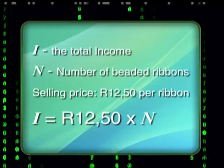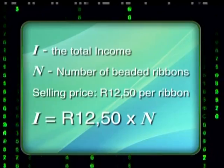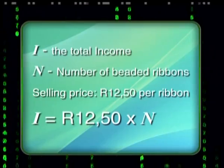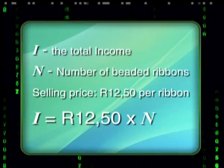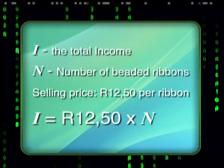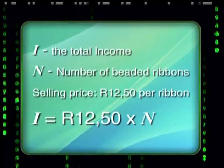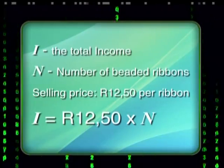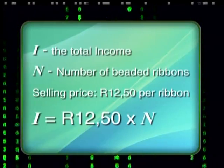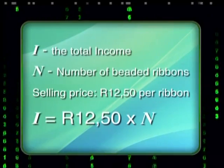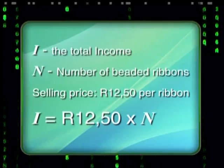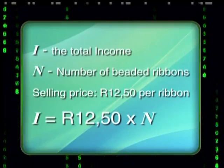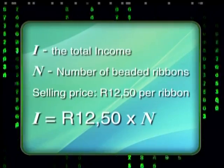I represents the total income and N represents the number of ribbons. So I, the total income, equals the selling price of one ribbon — 12 rand 50 — times N, the number of ribbons sold.